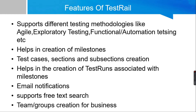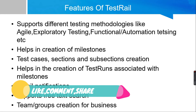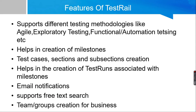TestRail also offers email notifications, which notify particular users of the changes happening in the project. It supports free text search, so you can search in TestRail with any keyword from the search box. And it supports teams and groups creation for businesses — you can create your own team or group with all the team members. For example, you can create a group for testers and a separate group for developers, and add your team members into those particular groups.